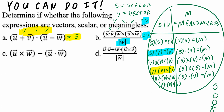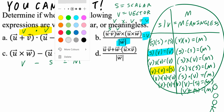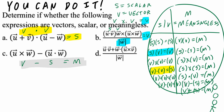Part C: (vector U cross vector W) minus (vector U dotted to vector W). The cross product of two vectors gives a vector. The dot product of two vectors gives a scalar. When you try to take a vector minus a scalar, this is going to be meaningless. So we add to our list: a vector minus a scalar is meaningless, and likewise, a vector plus a scalar is also meaningless.